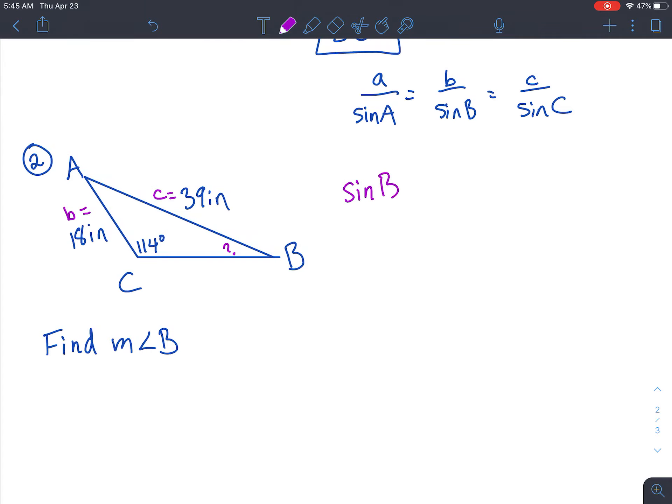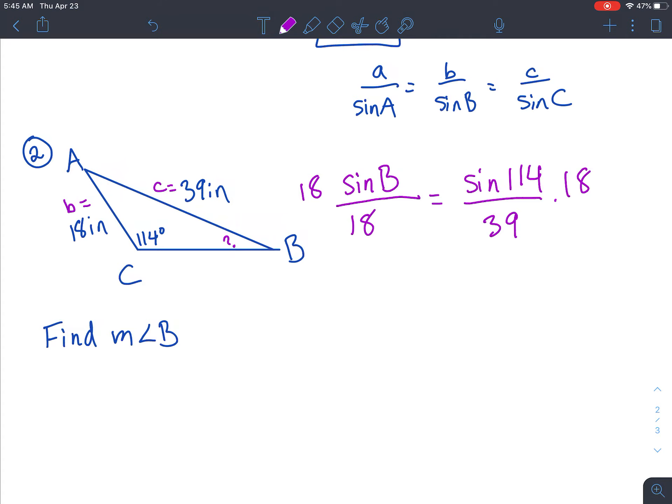And we're going to start with your unknown, which is sin of B. And we want to know what angle B is. Matches up with 18 inches. And that's the same as sin of 114, which is C. So we have to match it up with little c, which is 39. Multiply both sides by 18. I'm going to get this by itself.